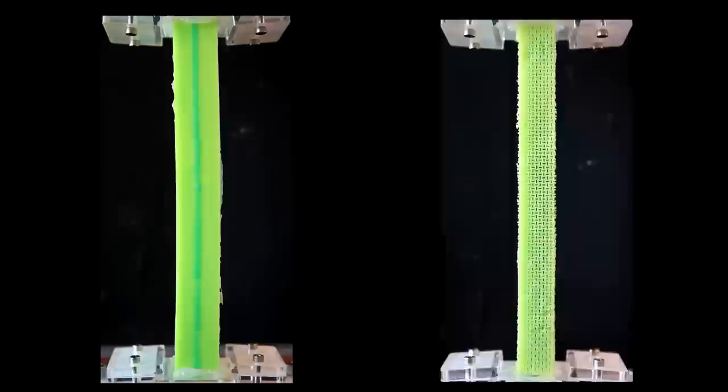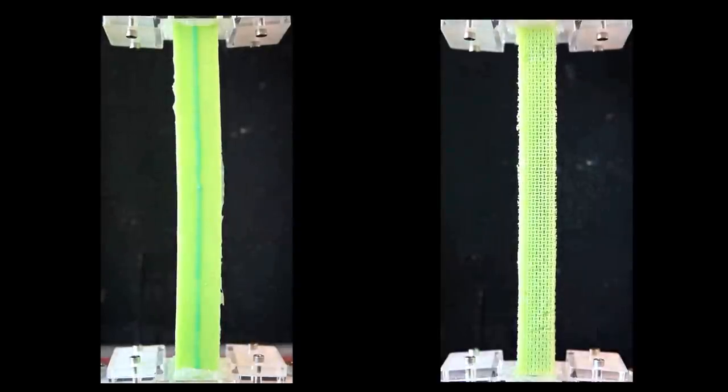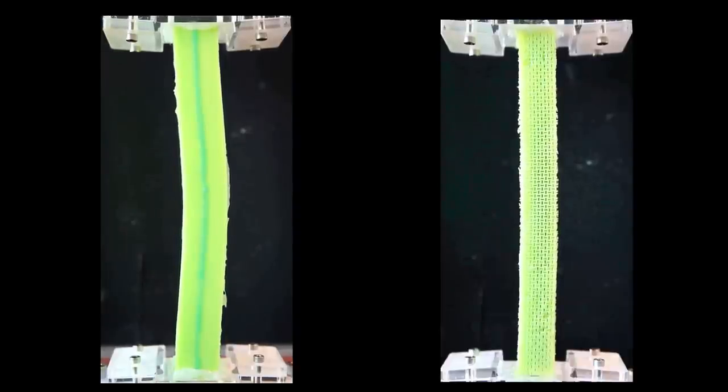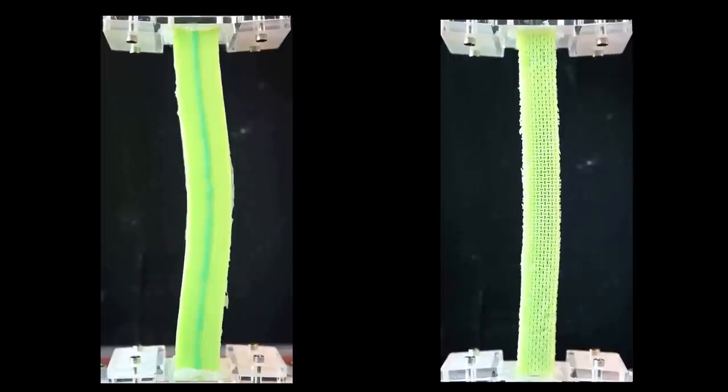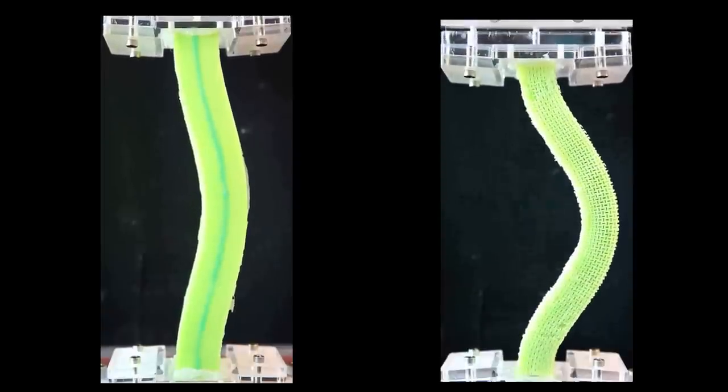Let's compare what happens when we slowly add weight to the top of a regular beam, shown on the left, and compare it to the same situation for a metabeam, shown on the right. Notice that both beams buckle, but the metabeam buckles much more dramatically than the regular beam. It almost seems to run away.